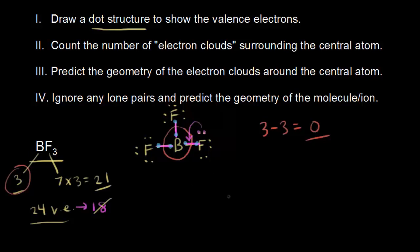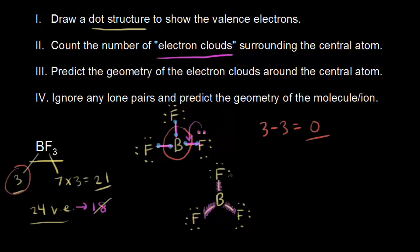Let me go ahead and redraw that in a slightly different way as we talk about predicting the shapes. I'll put in the lone pairs of electrons on the fluorine and move to step two: count the number of electron clouds surrounding the central atom. Electron clouds are either bonding electrons or non-bonding electrons — lone pairs — just regions of electron density that can repel each other. Looking at the central atom, boron, I can identify three electron clouds that are going to repel each other, allowing us to predict the geometry of those electron clouds around the central atom.